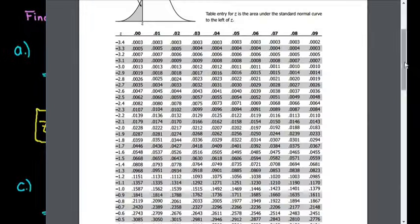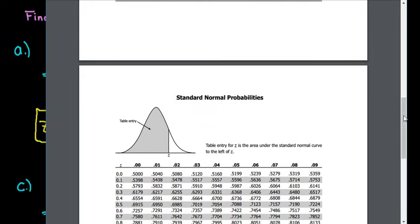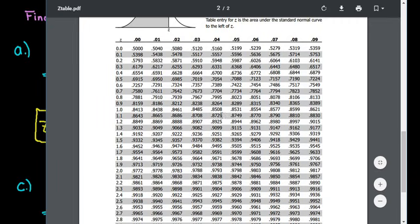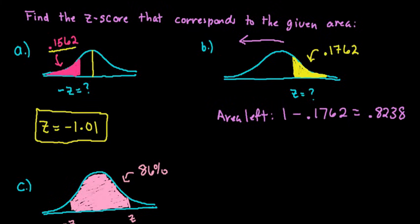So what we would do is we would pull up our table. We would go to the positive side and remember that we are looking for .8238. So we would scroll through on here until we found .8238 and it happens to be right here. And so then we would look at the left. We have 0.9 and then our last number would be 3. So 0.93 would be our z-score.